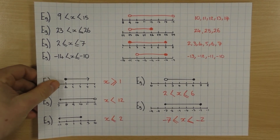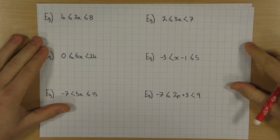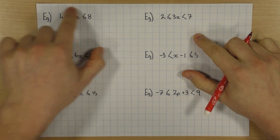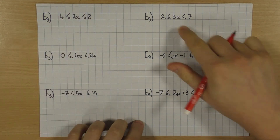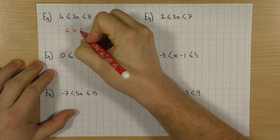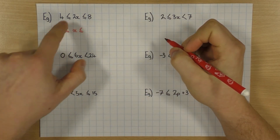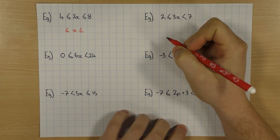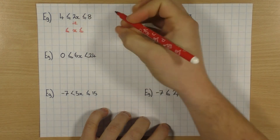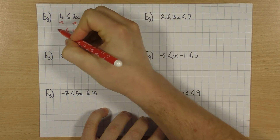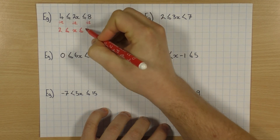One last thing to show you: questions like this tend to trip people up, but they're really easy — when you have an inequality like this where we have 2x or a 6x or a 5x in the middle, whereas we're used to seeing just x. I want to change it to x. 2x just means 2 times x, so if I want to get rid of that 2, just like the balance method, I would divide by 2. But if I divide that by 2, I've also got to divide everything by 2. So 4 divided by 2 is 2, and 8 divided by 2 is 4.